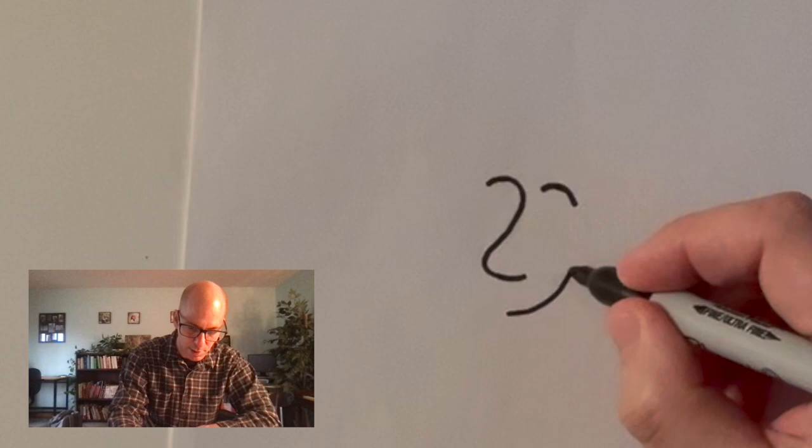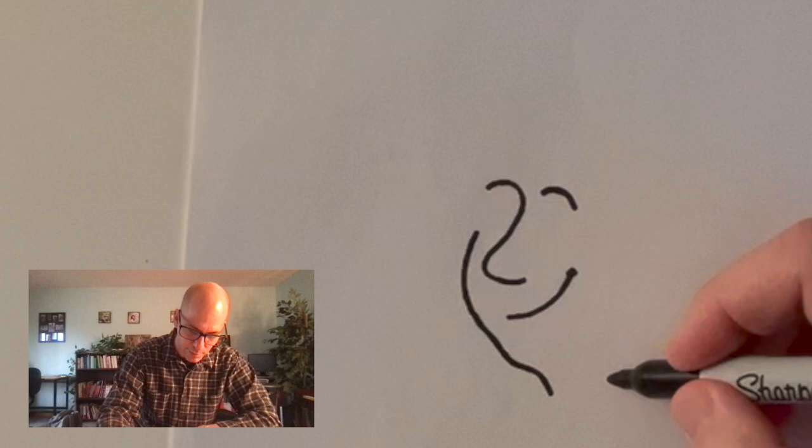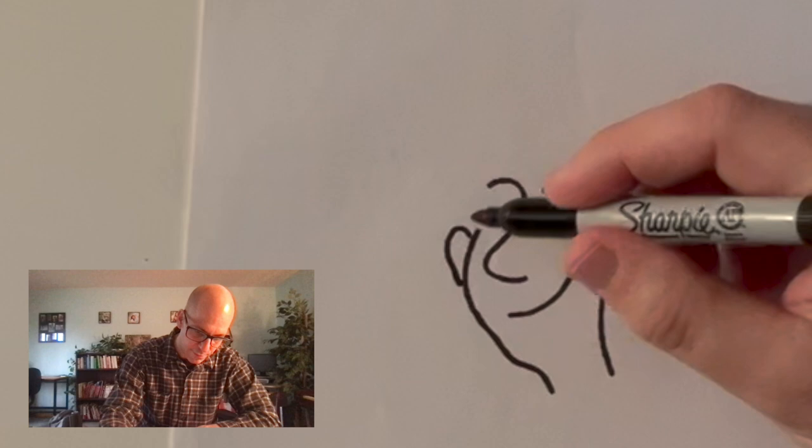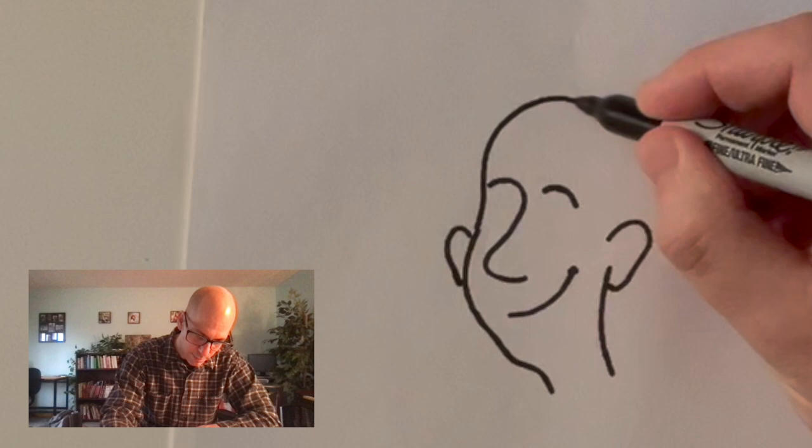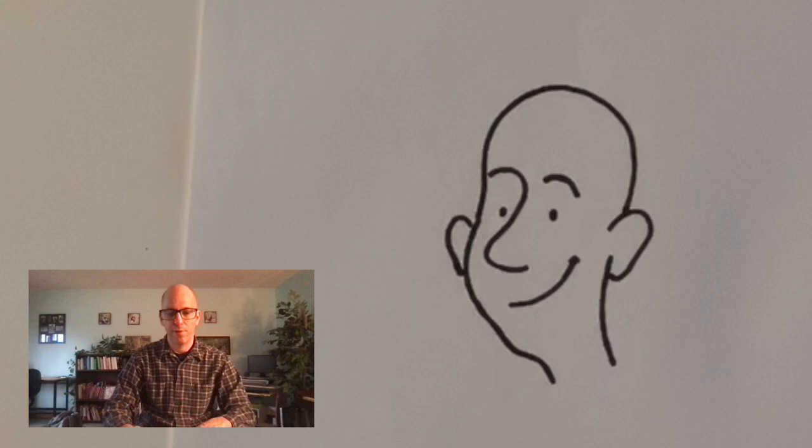And then my face kind of comes down. And I've got a little bit of a chin, but really I don't have a very strong chin. And then I've got my ear over here. My other ear over here. And now for the part that really makes me who I am. The bald head. So there we go. That is me.